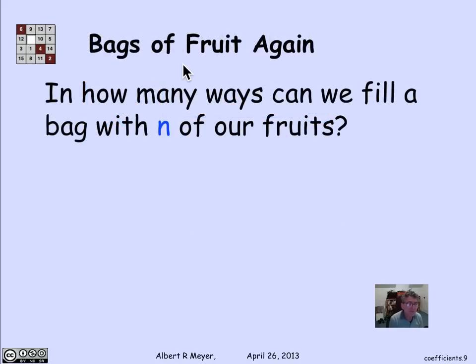Well, let's go back to the bags of fruit problem that we considered earlier, where we had to select a bag of n fruits: bananas, apples, and oranges, subject to some constraints. And we had figured out there, in a separate way, that the generating function for the number of ways to pick bags of fruits was 1 over (1 minus x) squared.